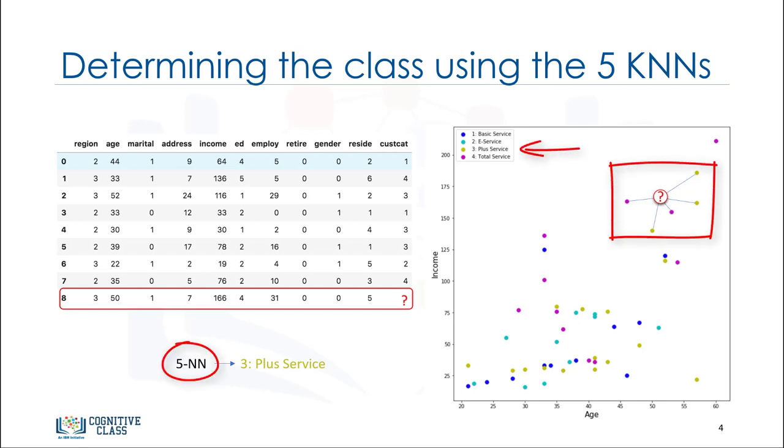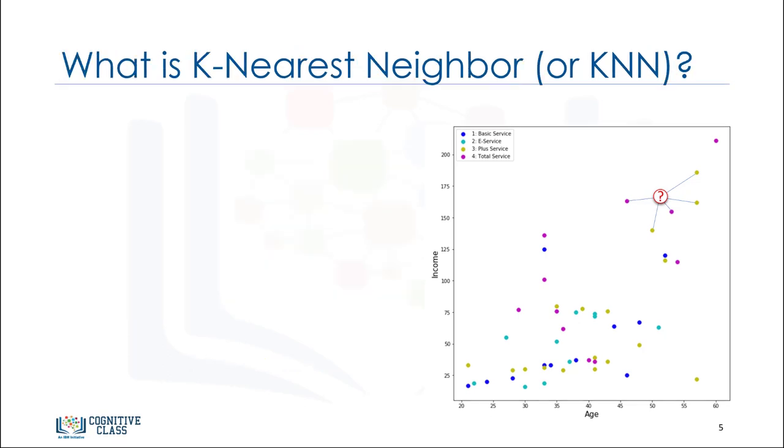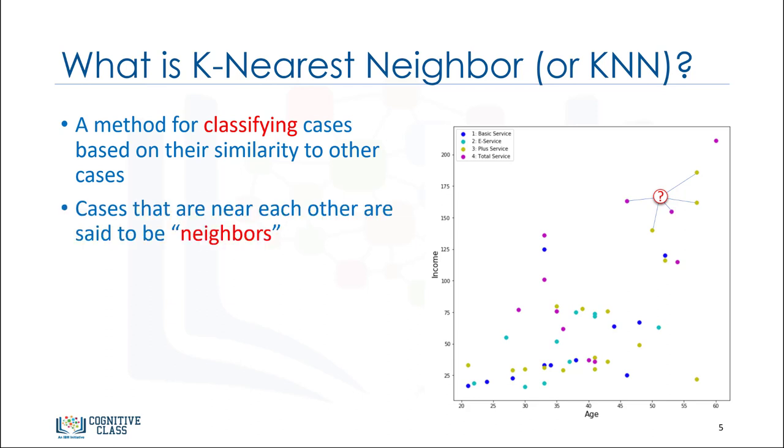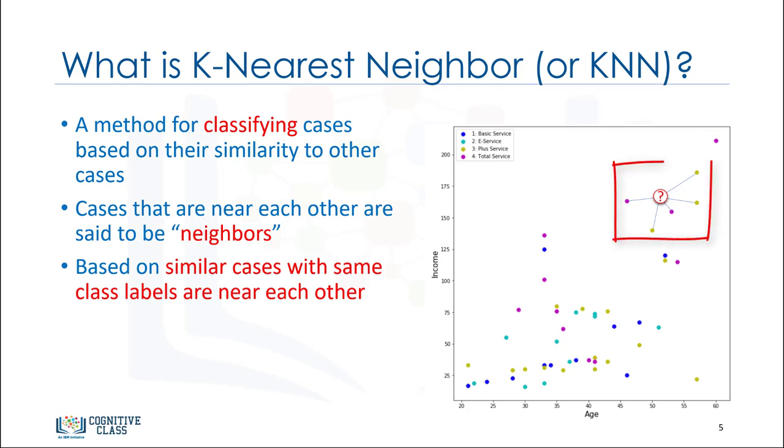This example highlights the intuition behind the k-nearest neighbors algorithm. Now, let's define the k-nearest neighbors. The k-nearest neighbors algorithm is a classification algorithm that takes a bunch of labeled points and uses them to learn how to label other points. This algorithm classifies cases based on their similarity to other cases. In k-nearest neighbors, data points that are near each other are said to be neighbors. k-nearest neighbors is based on this paradigm. Similar cases with the same class labels are near each other.